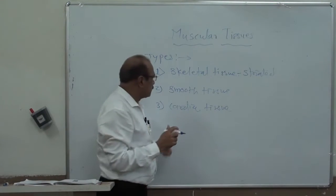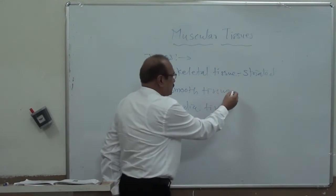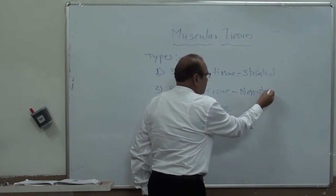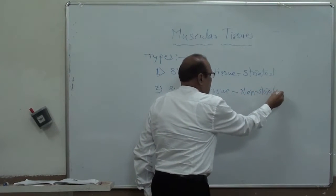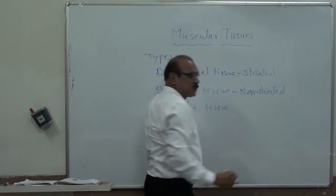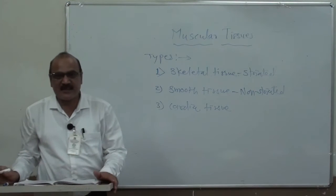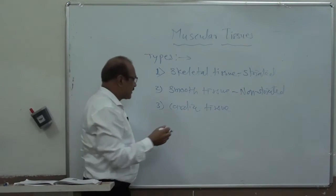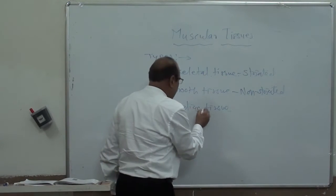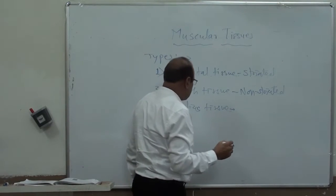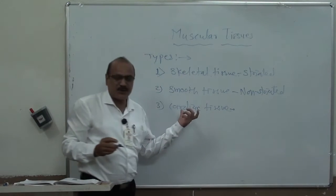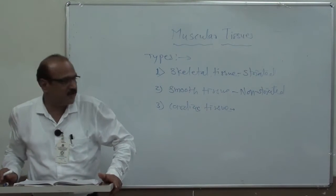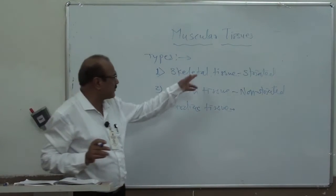Smooth muscle tissue is non-striated. In cardiac tissue, striations are present, but cardiac tissue is a special type — it is a combination of these two types of tissue.